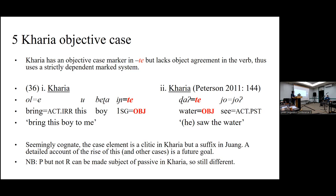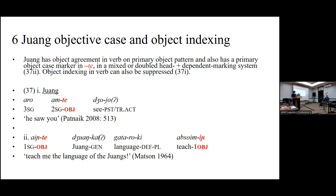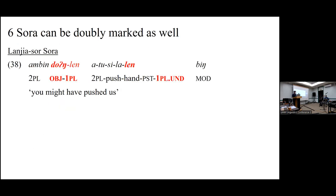Interestingly, within Karya, primary and secondary objects are still syntactically distinct even though their morphological marking is the same — P's but not R's can be made subject to passivization in Karya. So even though they're marked the same morphologically, they're clearly distinct syntactically. Juang has the same cognate -te, but it's definitely a suffix in Juang, while it's an enclitic in Karya — the morphotactic integration is distinct. And Juang still has marking of the object in the verb, double-marking the object in both dependent and head-marking systems simultaneously.